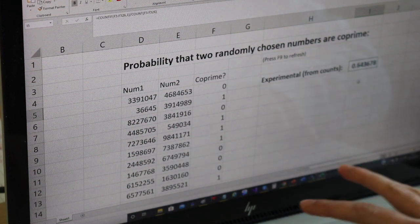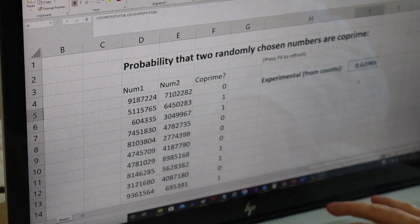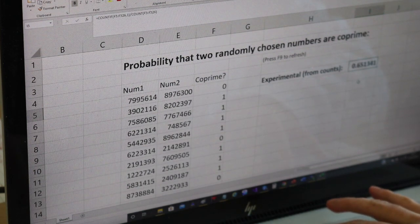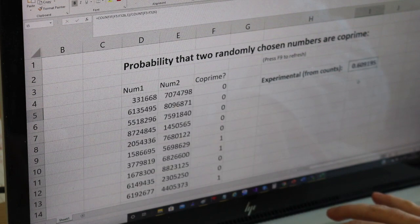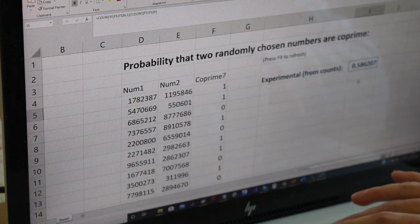But if I just press F9 to refresh this, you can see it's gradually changing and you can see that the numbers are hovering around the sort of 60% mark, the 61% mark. So around three fifths of the time the two numbers will not share any factors at all other than one.